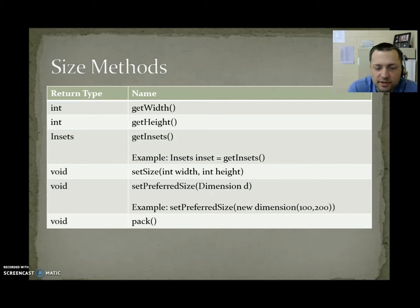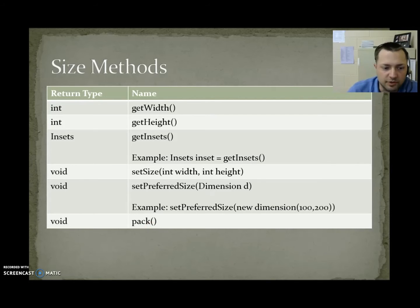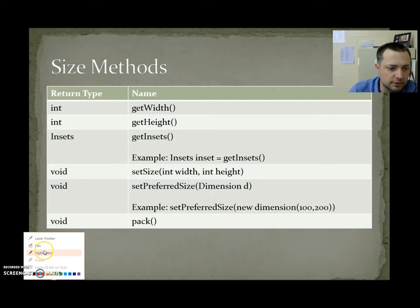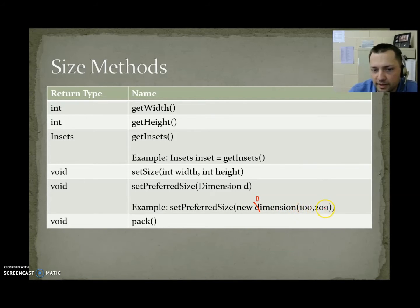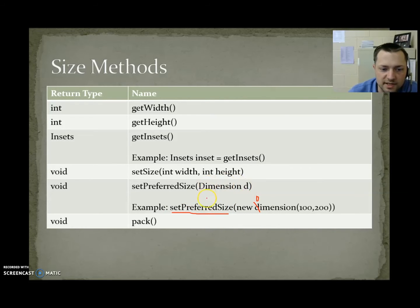setSize, given a width and height, makes the frame become that size. setPreferredSize receives a Dimension — new Dimension(width, height) — with a capital D. It's similar to setSize, but some commands want you to use setPreferredSize instead of setSize.